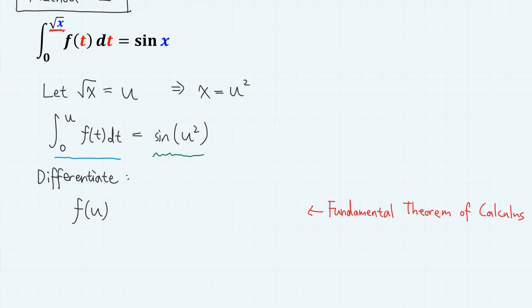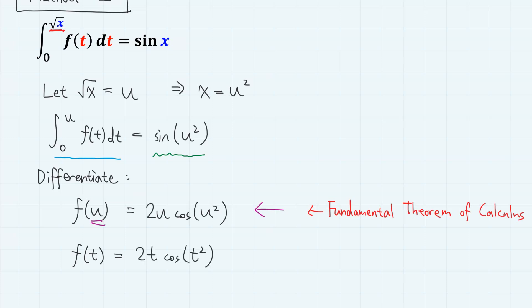On the right-hand side, we differentiate sin(u²) using the chain rule, giving 2u · cos(u²). This is essentially the function we are looking for. So if we just change the variable from u to t, we have f(t) = 2t · cos(t²).